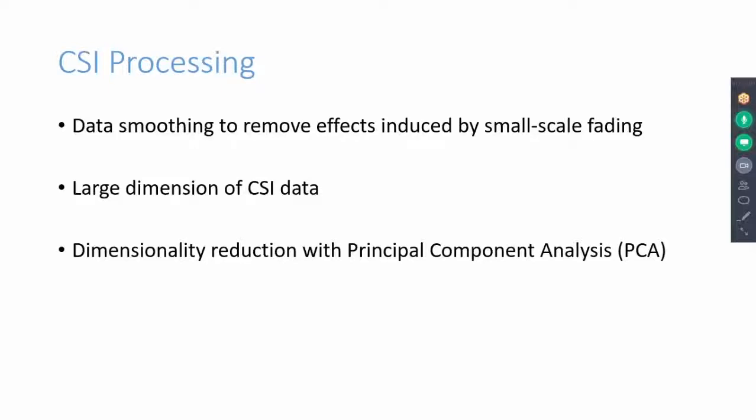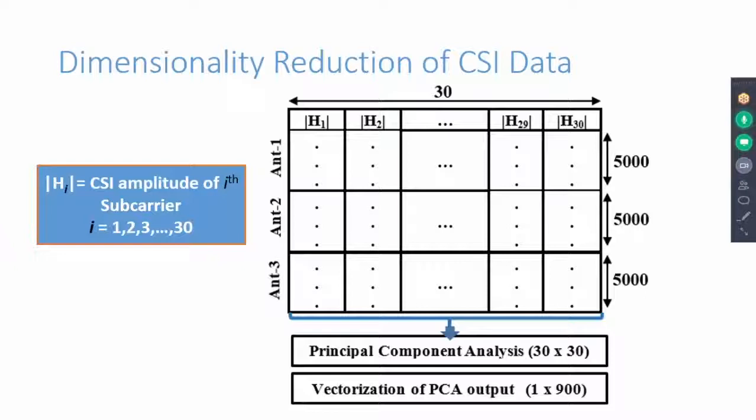Before giving CSI data to machine learning algorithms, we pre-process it. Due to the very large dimension of CSI data, we apply dimensionality reduction on it. In particular, we use principal component analysis for dimensionality reduction. We later vectorize PCA output to be used as a feature set by machine learning algorithms.